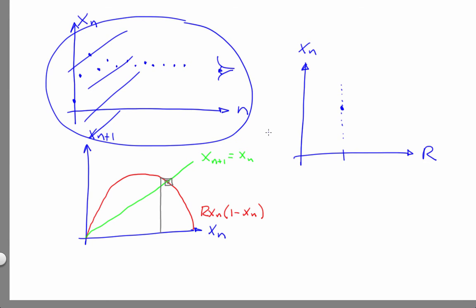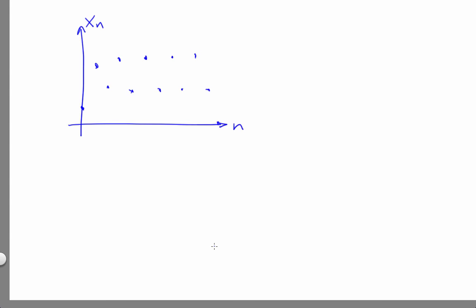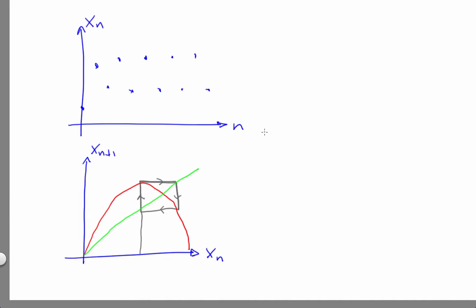If we turn r up a little bit, the time domain plot will look like this. The return map will look like this, and the point on the bifurcation diagram will look like two dots — three different representations bringing out three different things.